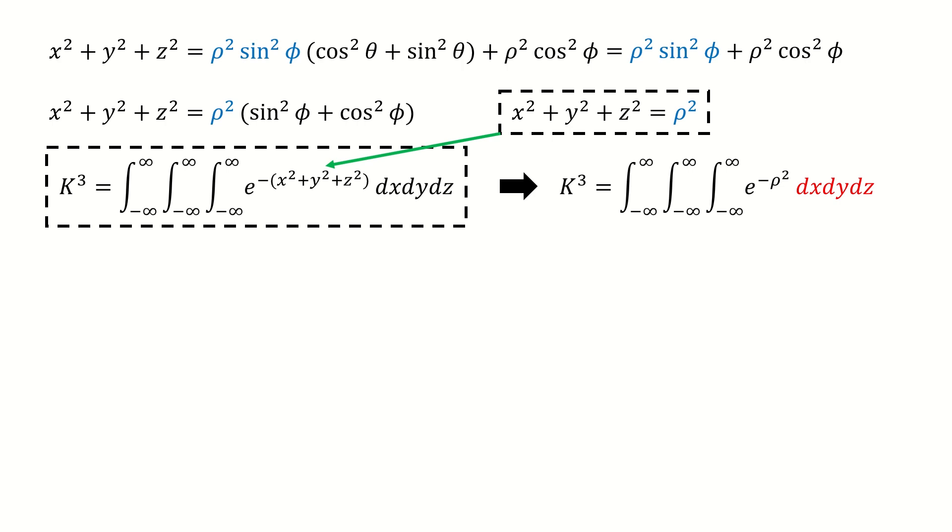Then we plug in to replace this power index, so we got here. Next, we need to deal with this dx dy dz term. This term can be written as Jacobian multiplied by d rho d phi d theta.